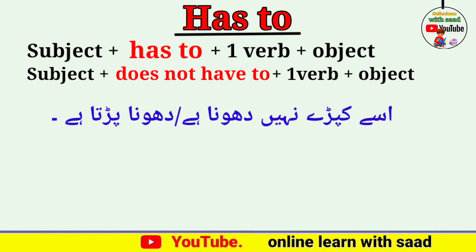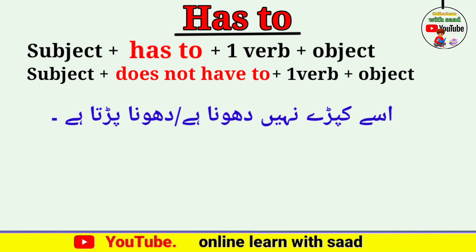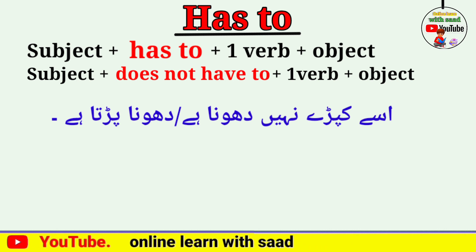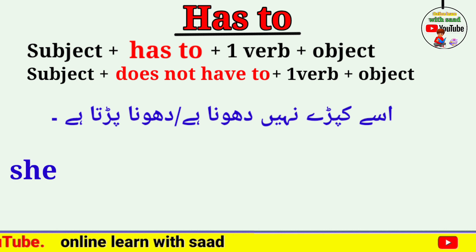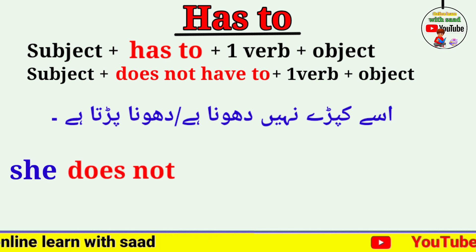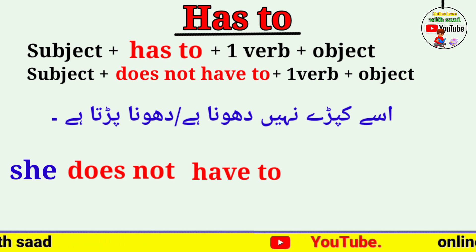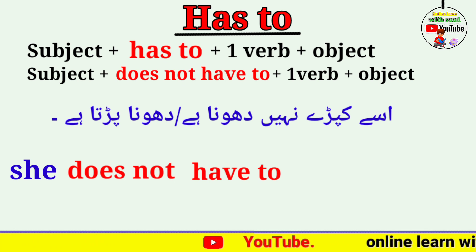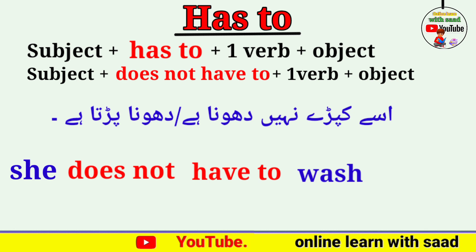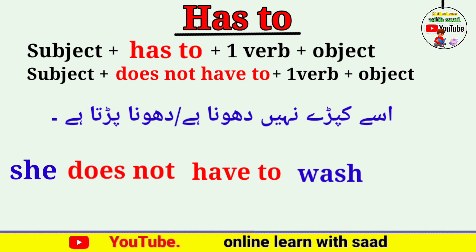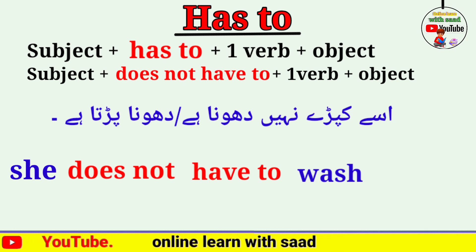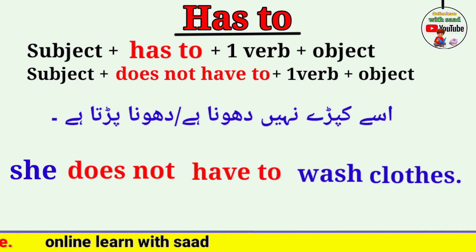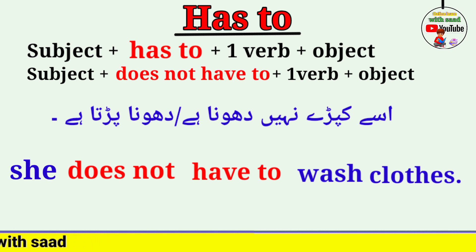پہلا جملہ: 'اسے کپڑے نہیں دھونے ہیں / اسے کپڑے نہیں دھونا پڑتا ہے'۔ Subject 'she'، پھر 'does not have to'، پھر first form of verb 'wash'، پھر object 'clothes'۔ She does not have to wash clothes.